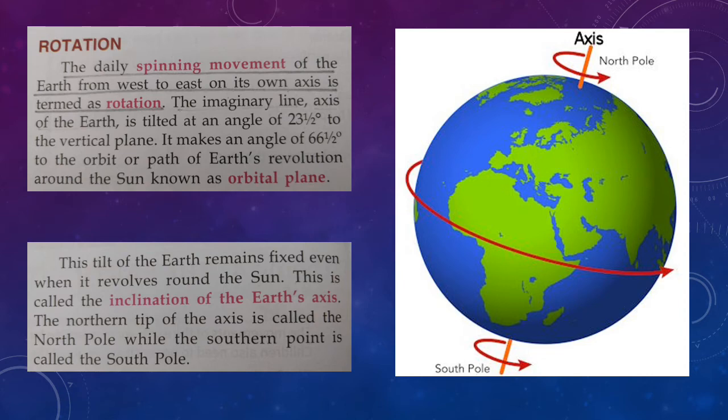This tilt of the Earth remains fixed even when it revolves around the sun. You can go back and look in the video that the Earth remains tilted. This is called inclination of the Earth. And the northern tip of the axis, as you can see in the picture here, is called the North Pole, while the southern tip of the Earth is called the South Pole. North means up and south means down. You can see the axis, and you can also see the Earth which is going round from west to east.